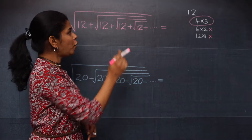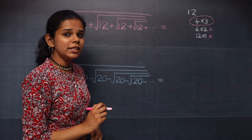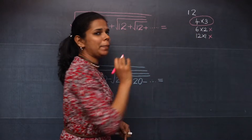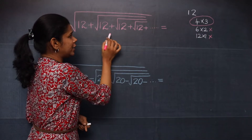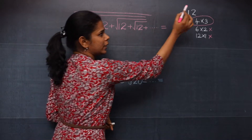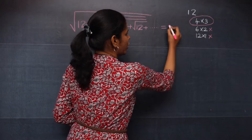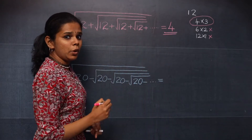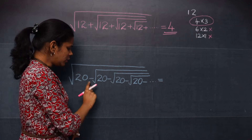Since you have addition in this question, you will always choose the bigger number from the pair of factors. If you have a plus sign, you choose the bigger number. Here the bigger number is 4, so your answer will be 4.